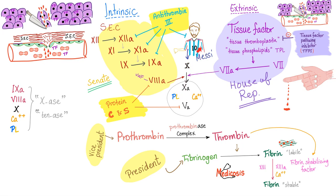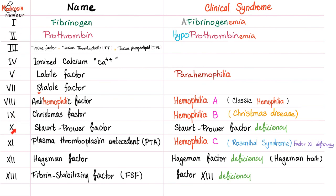Factor 10 is like Lionel Messi, the most important player in the whole team. Factor 10 deficiency: PT prolonged, PTT prolonged. TT could be normal or prolonged. Looking at coagulation factors — hemophilia A is factor 8, hemophilia B is factor 9. Factor 10 deficiency is here in the table. This is factor 10 deficiency.